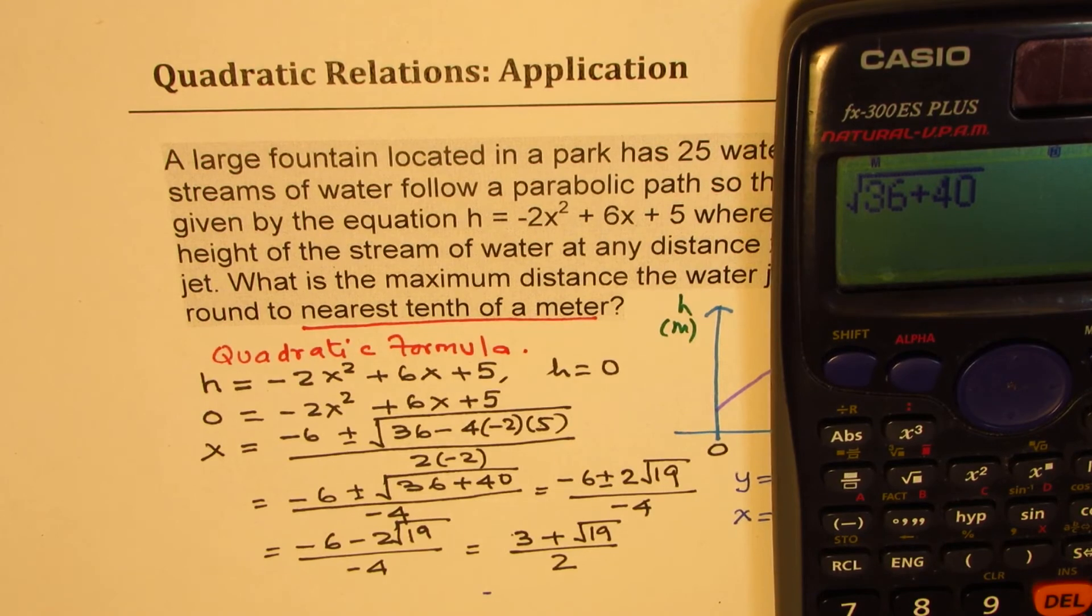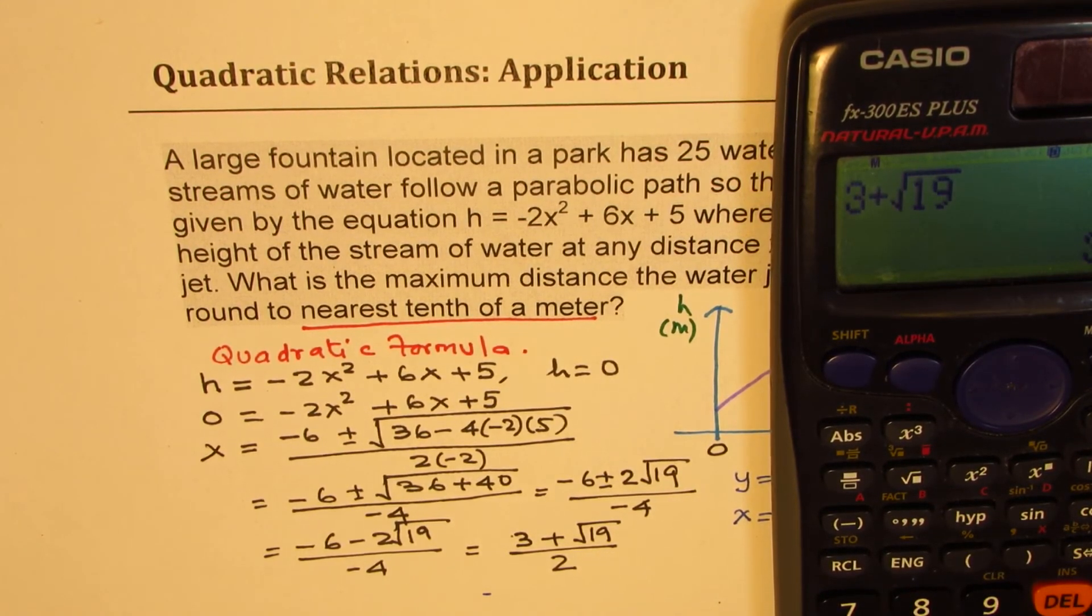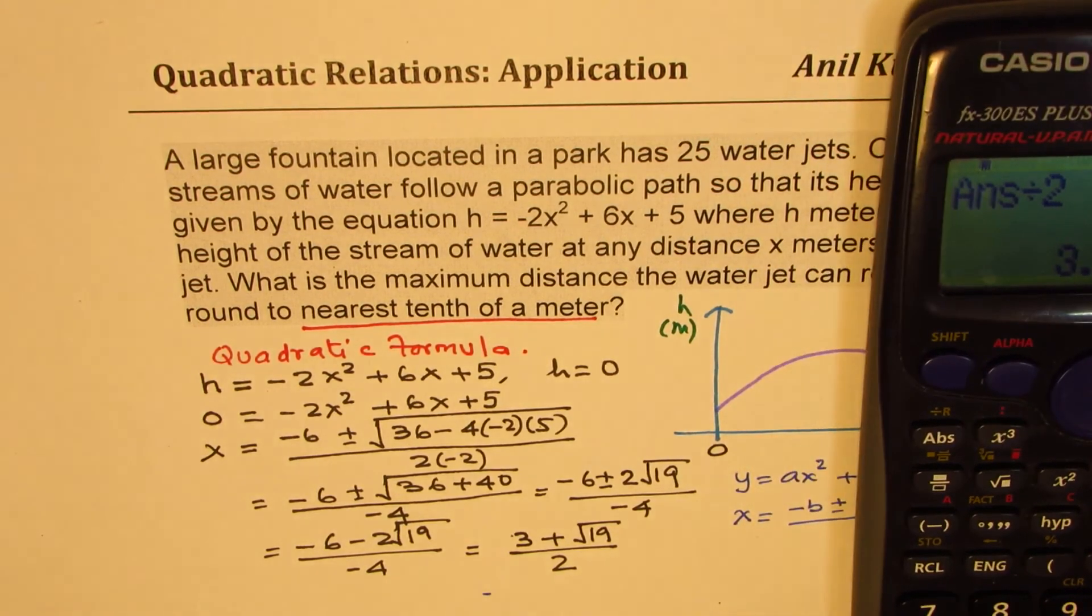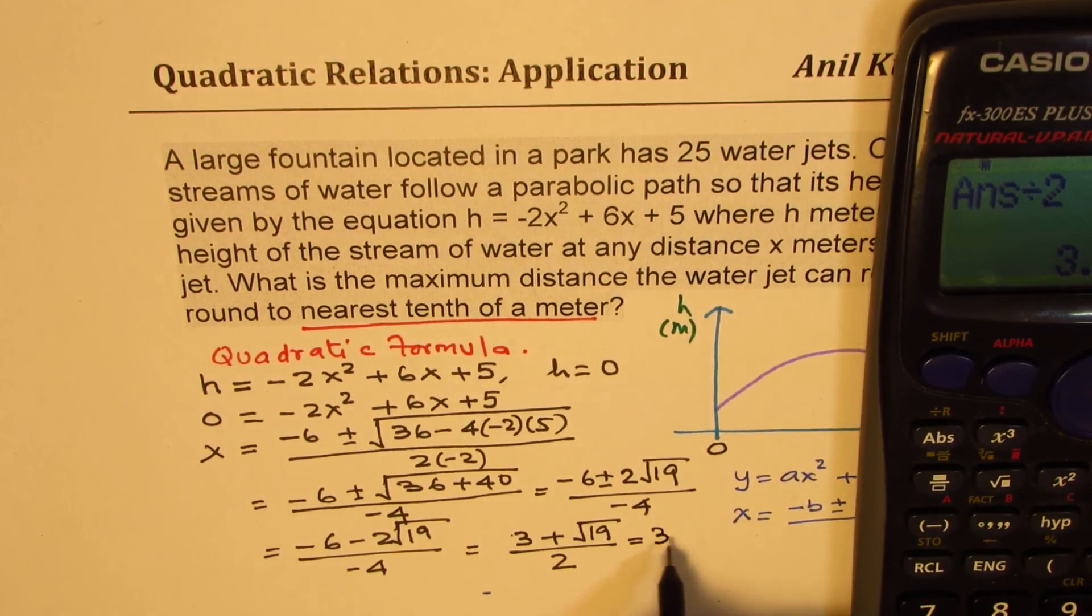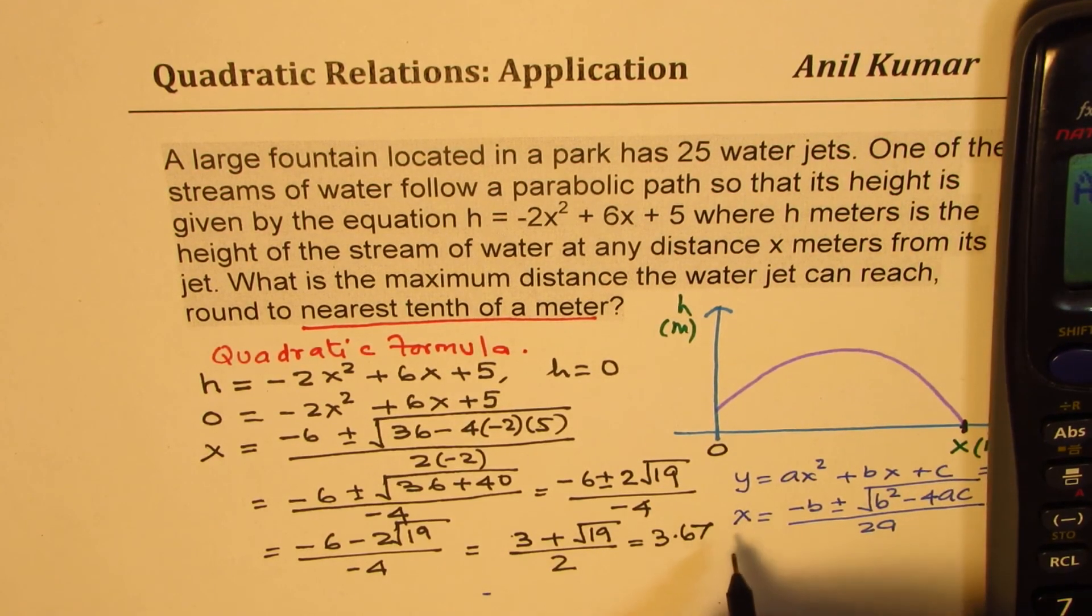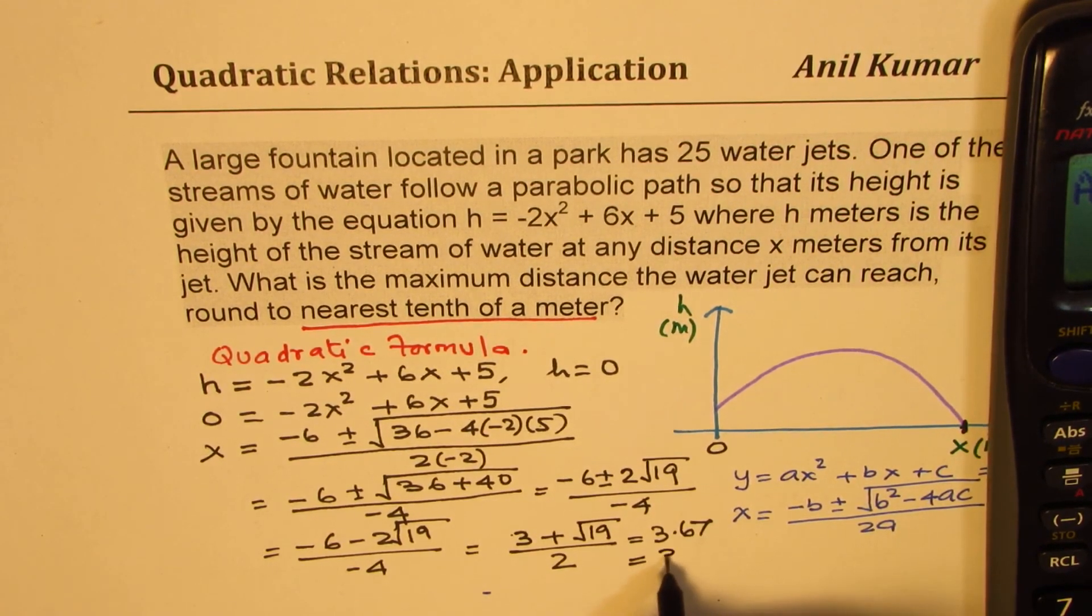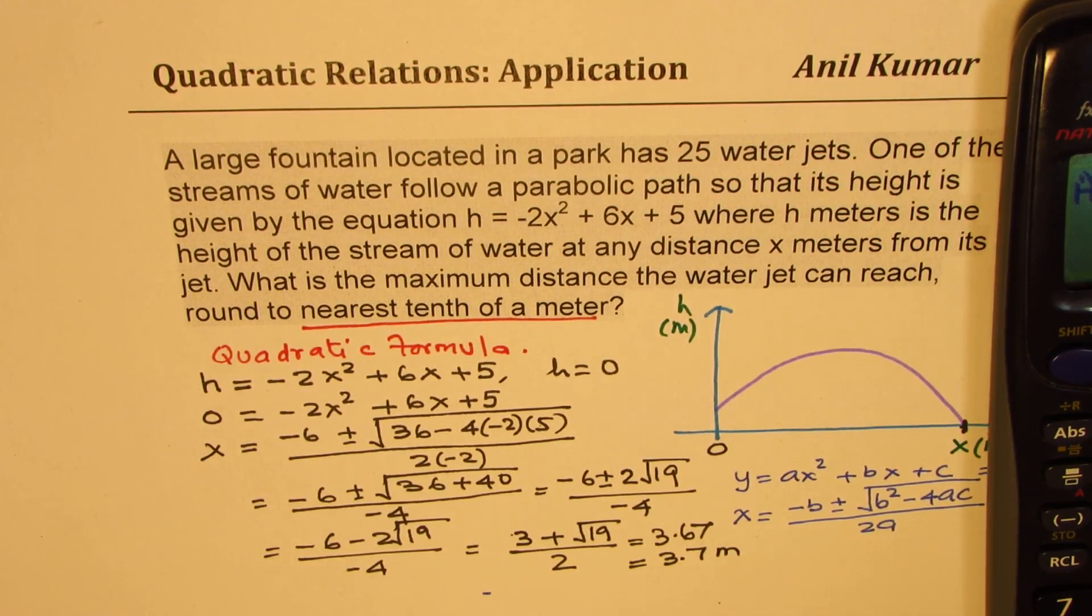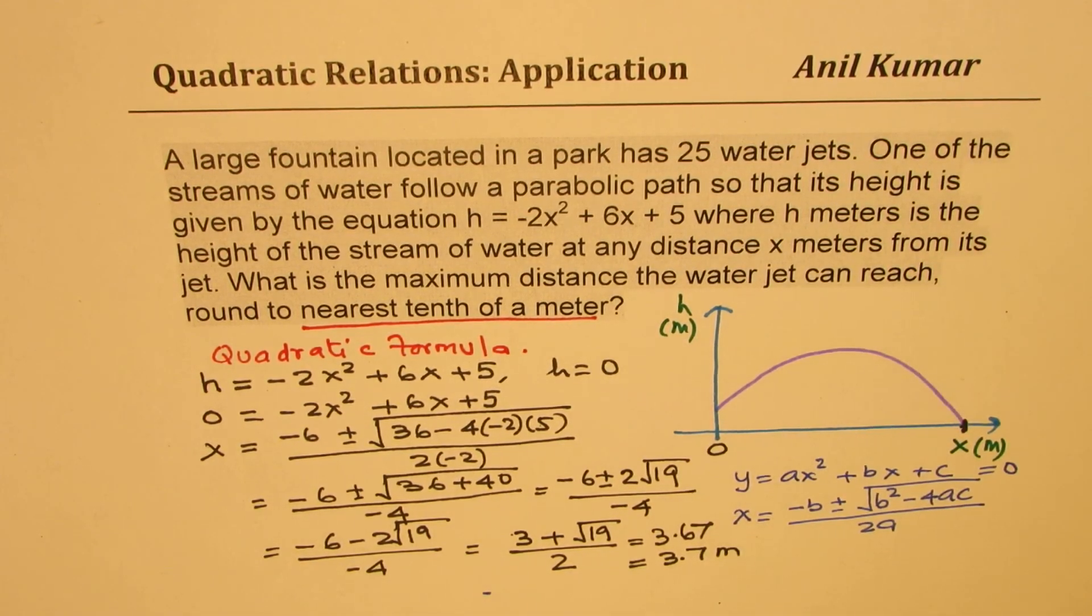So, let's calculate this value. So it is 3 plus square root of 19, which is equal to in decimals, and then divide by 2 gives us a value in decimals as 3.67. So rounding this to one decimal place gives us 3.7 meters. So, that becomes the solution for this particular case.